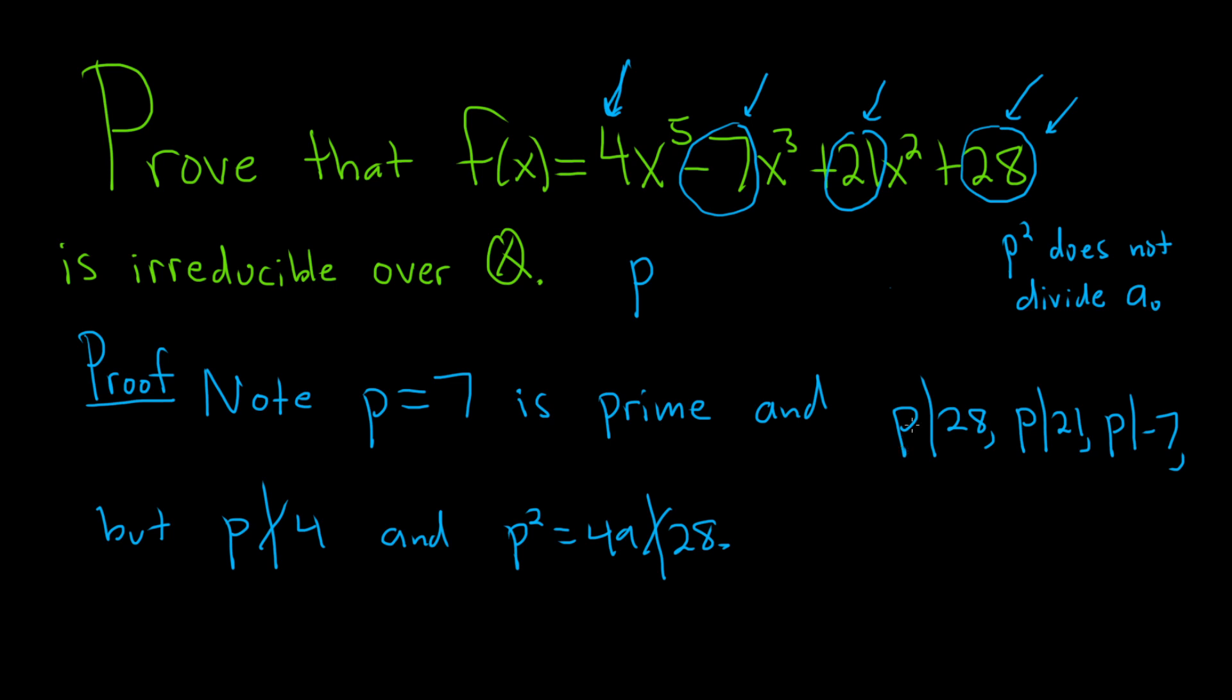So we have that p divides all of the circled ones, but it doesn't divide the leading coefficient, and p squared doesn't divide the constant term. So this means f is irreducible over the rational numbers by Eisenstein's Criterion.